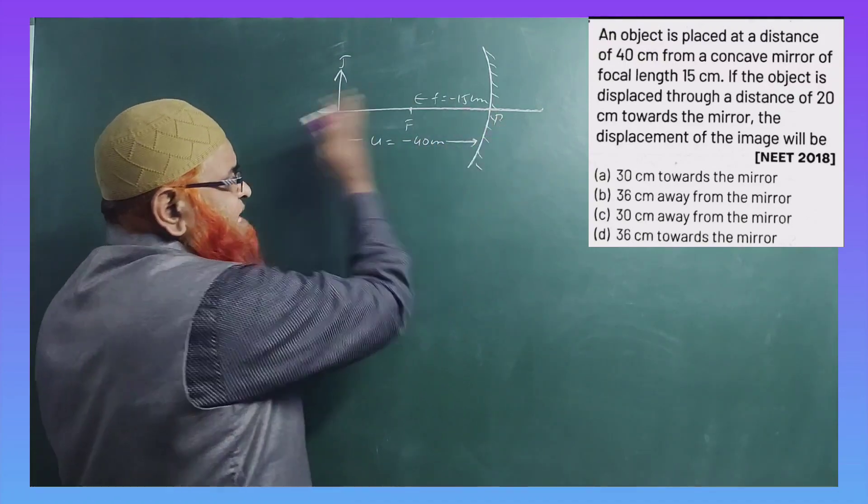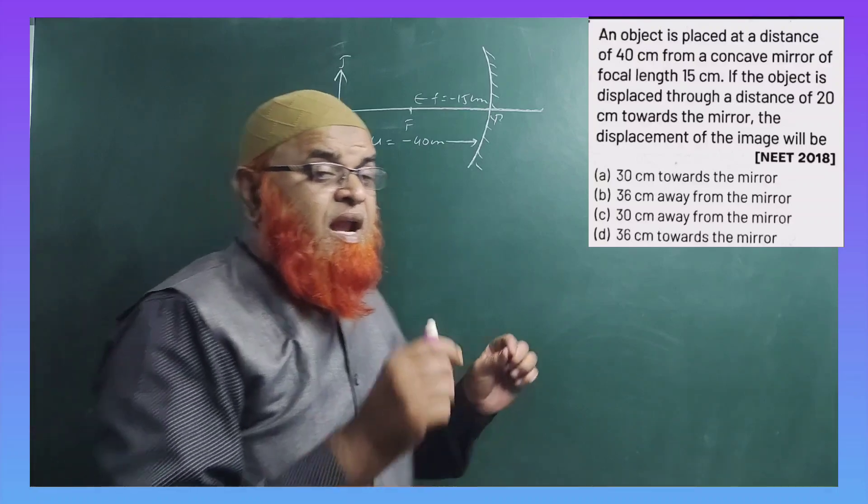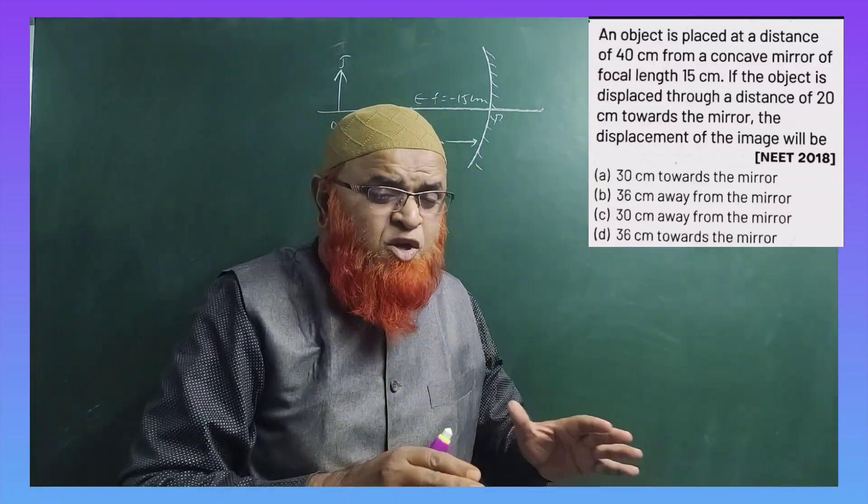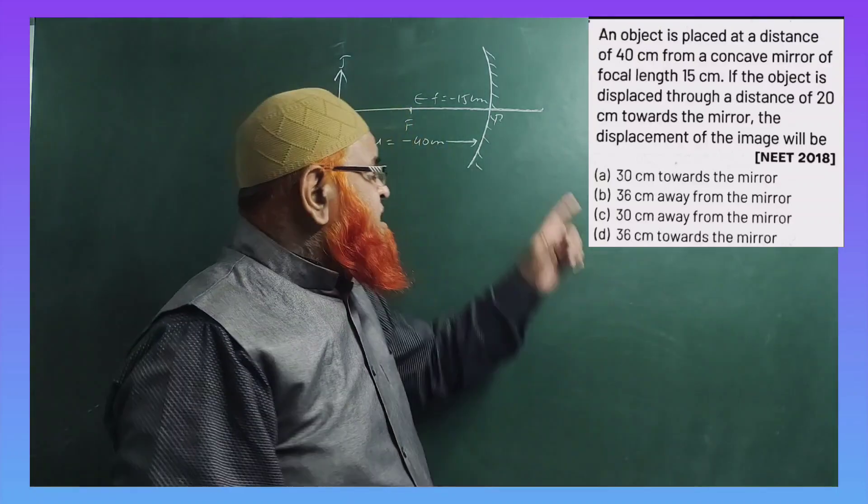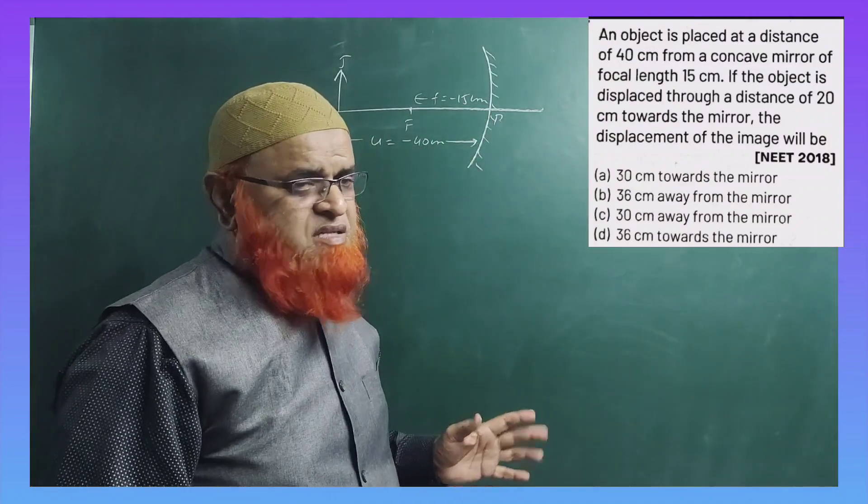This is taken as pole. Everything is coming at the left side of the pole, which is taken as negative according to the sign conventions. So I have taken minus 15 and minus 40 centimeters.